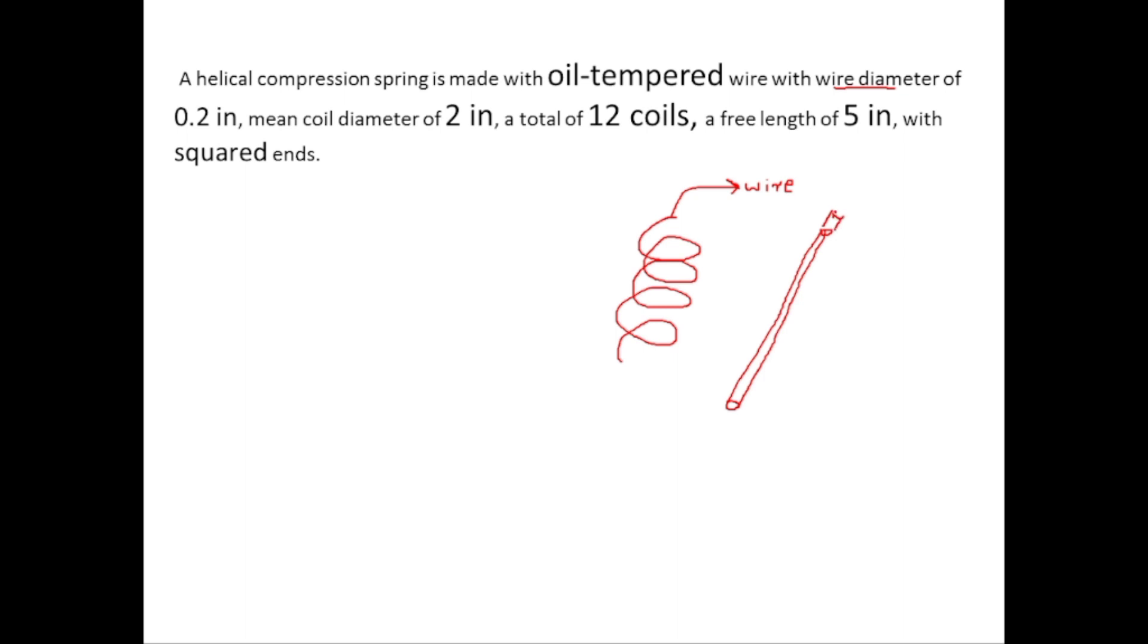Now mean coil diameter. If we have a top view of the spring, this is the mean coil diameter, this is external diameter, and this is internal diameter of the spring. Mean diameter is the average of these two. There are total 12 coils in the spring - this is one coil, this is the second, this is the third, and up to 12 coils.